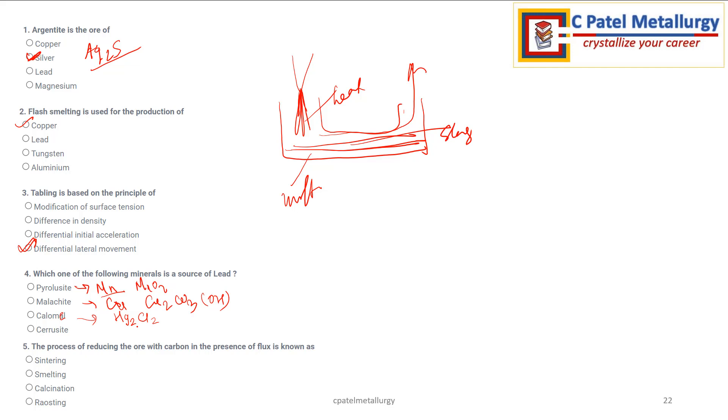Next is cerussite. And this cerussite is an ore of lead. This is PbCO3 of lead. And there is one more ore that is called as galena. This PbS is famous and it is called as galena. The major source of lead is PbS.